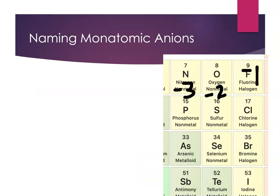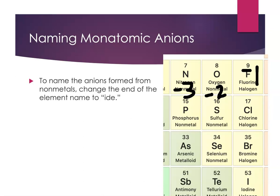Now let's talk about how to name monatomic anions. The group 17 elements — the halogens — always form −1 charges for a monatomic ion. The group 16 elements form −2. The group 15 elements — the nitrogen family — tend to form −3 ions when forming a monatomic ion. So you can write −3, −2, −1 for groups 15, 16, 17 respectively. Knowing where these elements are on the periodic table helps you predict what kinds of ions they'll form.